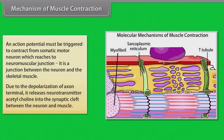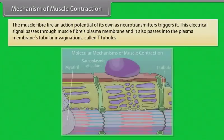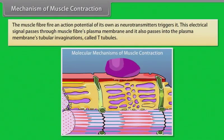The neuromuscular junction is the junction between the neuron and the skeletal muscle. Due to the depolarization of the axon terminal, it releases the neurotransmitter acetylcholine into the synaptic cleft between the neuron and muscle. The muscle fiber fires an action potential of its own as neurotransmitters trigger it. This electrical signal passes through muscle fibers' plasma membrane and into the plasma membrane's tubular invaginations called T-tubules.